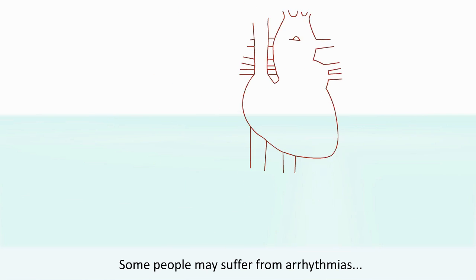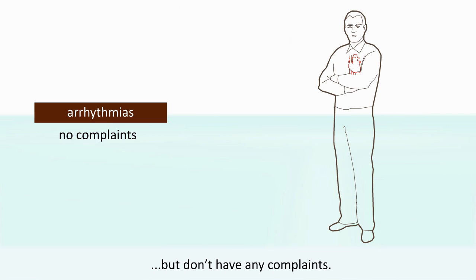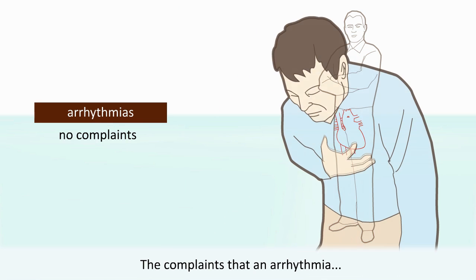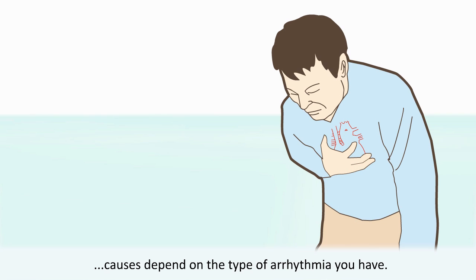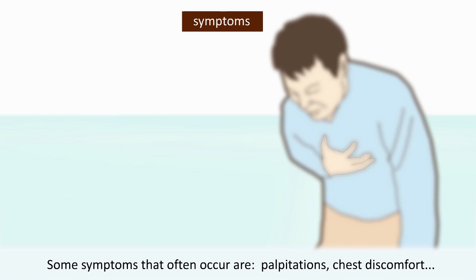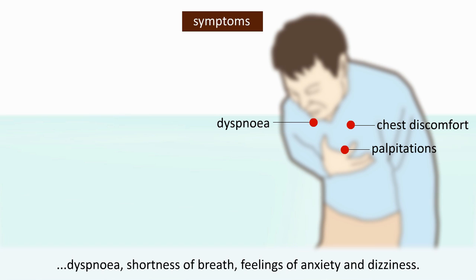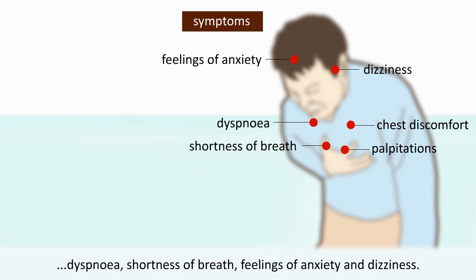Some people may suffer from arrhythmias but don't have any complaints. The complaints that an arrhythmia causes depend on the type of arrhythmia you have. Some symptoms that often occur are palpitations, chest discomfort, dyspnea, shortness of breath, feelings of anxiety, and dizziness.